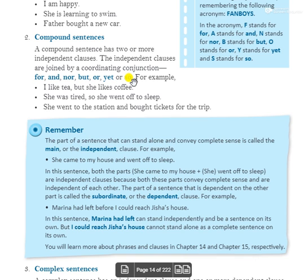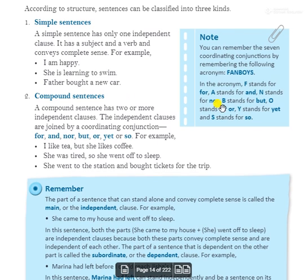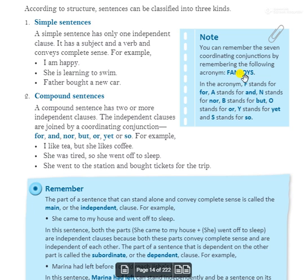To remember the coordinating conjunctions, use the word FANBOYS: F for 'for', A for 'and', N for 'nor', B for 'but', O for 'or', Y for 'yet', and S for 'so'. If you remember FANBOYS, you'll remember which conjunctions can be used in compound sentences.